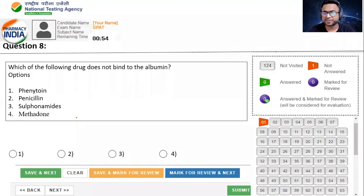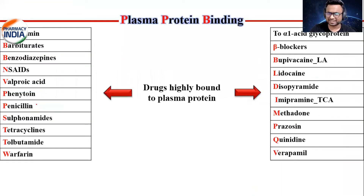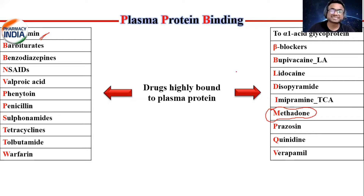Which of the following drug does not bind to the albumin? इन में से कौन सा drug albumin के साथ bind नहीं करता है? Options: Phenytoin, Penicillin, Sulfonamides, Methadone. Most of the बच्चे option D के साथ जाना चाहते हैं. Yes, it is Methadone. Albumin के साथ barbiturate, benzodiazepine, NSAIDs, valproic acid, phenytoin, penicillin, sulfonamide, tetracycline, tolbutamide, warfarin ये सारे albumin के साथ bind कर सकते हैं. और alpha-1-acid glycoprotein के साथ methadone था - that's why option D is correct answer.